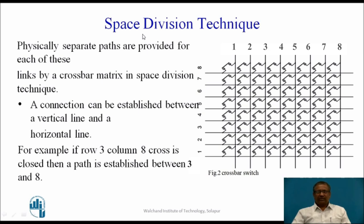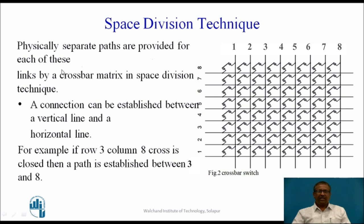To connect each terminal, for example here we have taken eight terminals. So we require a matrix of eight by eight — eight rows and eight columns. The connection is established between every input and every other output. Physically separate paths are provided for each of these links by a crossbar matrix. In space division technique, this is called a crossbar matrix.